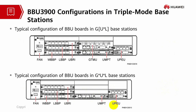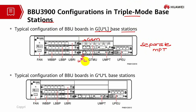The third type is a triple mode base station. The first configuration is G U times L in separate MPT mode, where the GTMU is in charge of GSM and the UMPT is in charge of U times L. The second example uses one UMPT card — one main control board in charge of G, U, and L. This is the co-MPT mode.